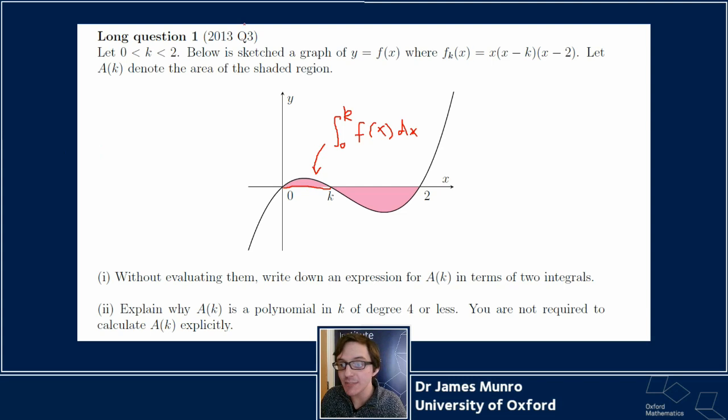So that's the area of this bit. This bit over here, well, we want to integrate from k up to 2, f of x dx. But there's a problem that because this bit is underneath the x-axis, this will give us a negative number if we do the integral. Integrals are sometimes negative. But areas are always positive. So we should put a minus sign at the front. I want integral from 0 to k of f of x dx. I want to subtract the integral from k up to 2 of f of x dx. These f's have got a little subscript k. Those are my two integrals. We're not going to do them.